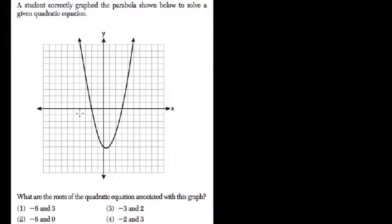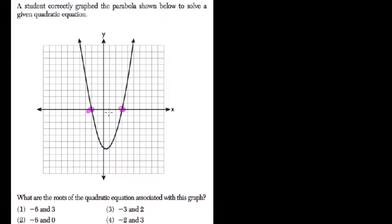This one, they want to know what are the roots, and the roots are just the points that cross through the x-axis. This point here is 1, 2, 3 — so 3, 0 — and this point here is negative 2, 0. So the roots are 3 and negative 2. Choice 4.